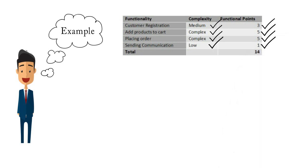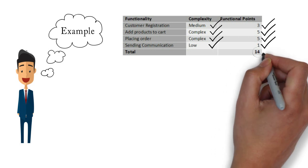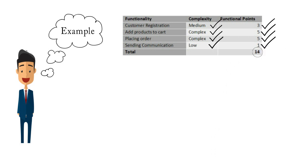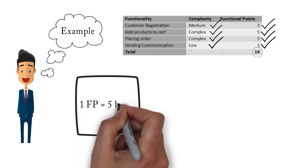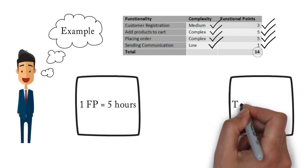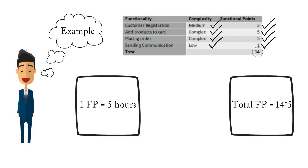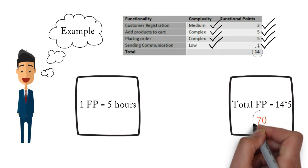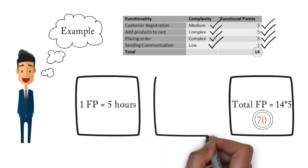The next step is to find out the total functional points for all the functionalities. If we sum up the values for all functionalities, we get a final value of 14. Now we need to derive the time to complete one functional point — in this case we are taking it as 5 hours, which means a person requires 5 hours to complete one functional point of effort.